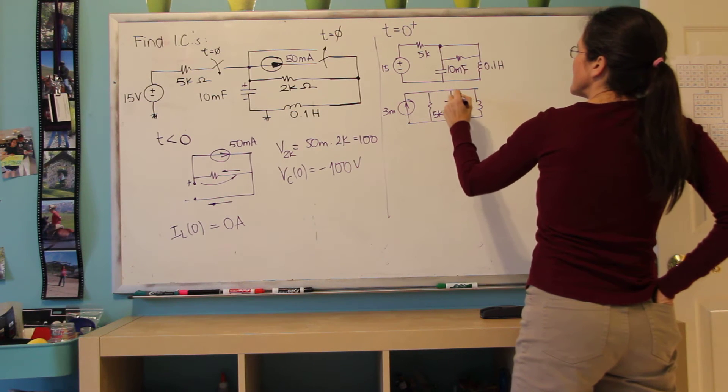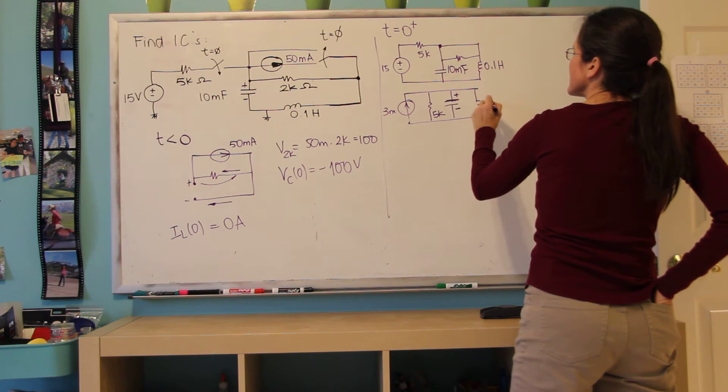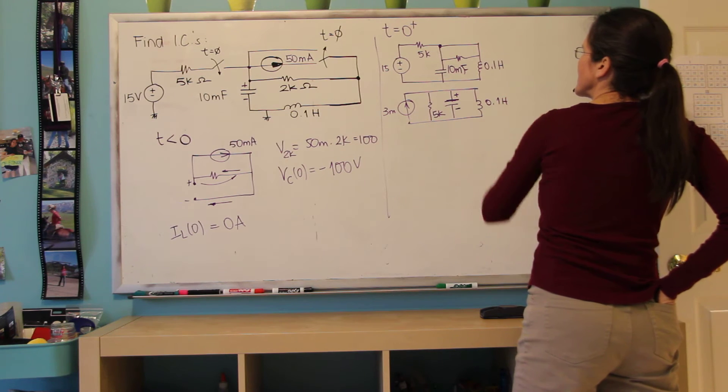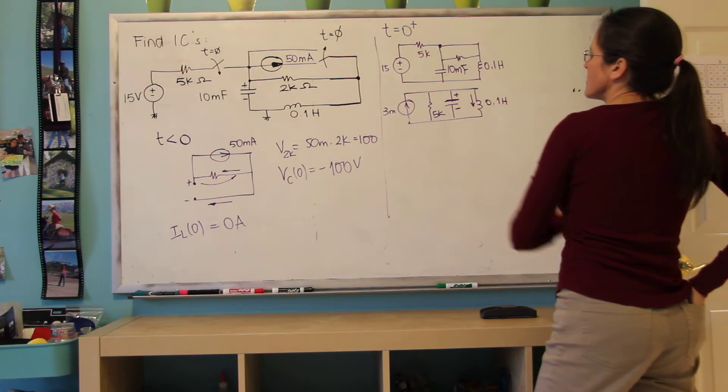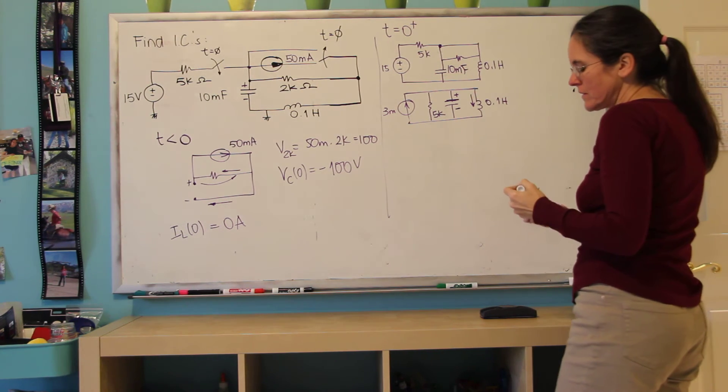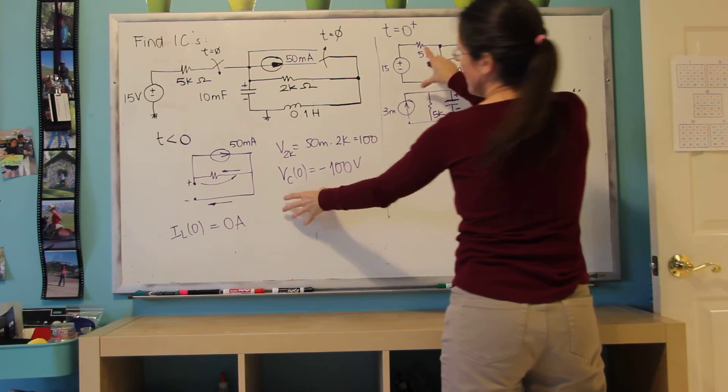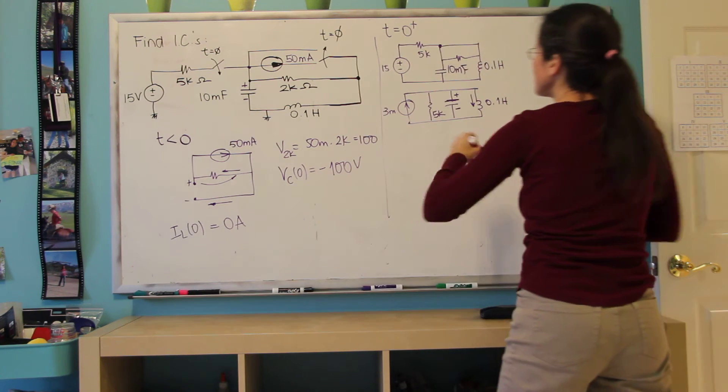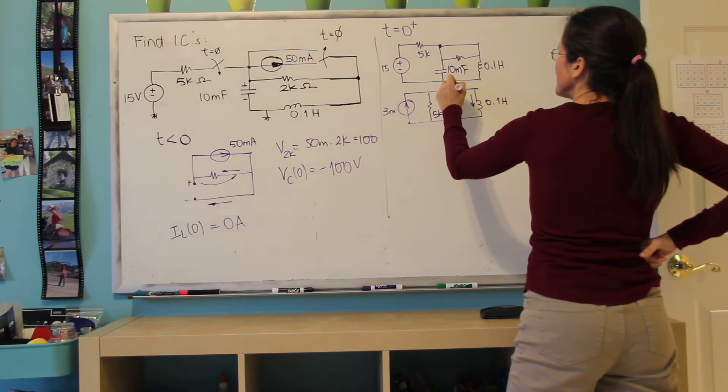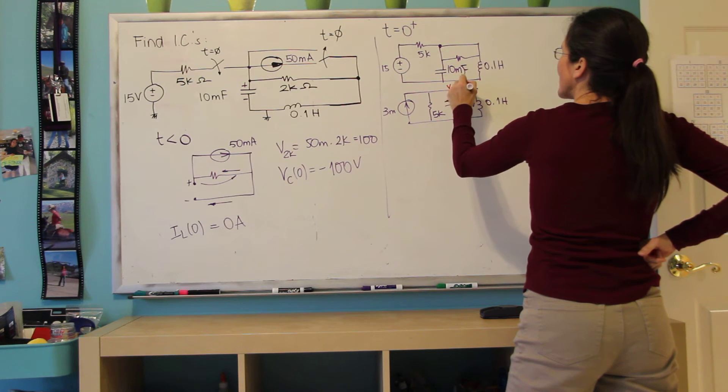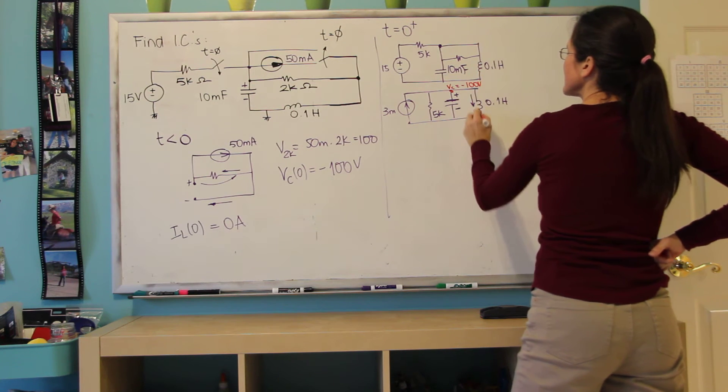This is still my 10 millifarad. This is still my 0.1 Henry. And the only two things that I can bring from T equals 0 minus, so from this side to this side of this circuit, the only two things I can bring is that this voltage here is minus 100 volts.